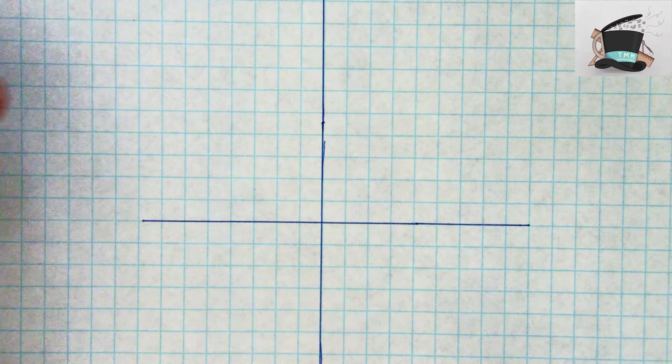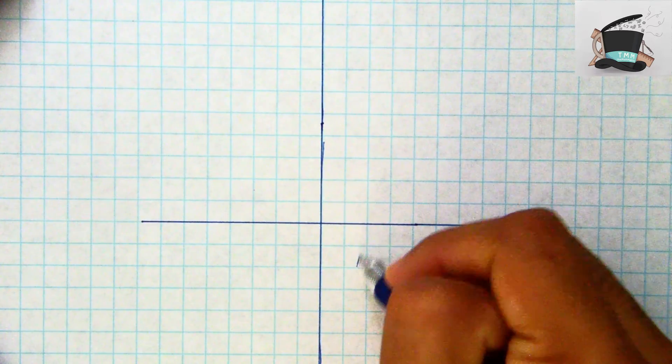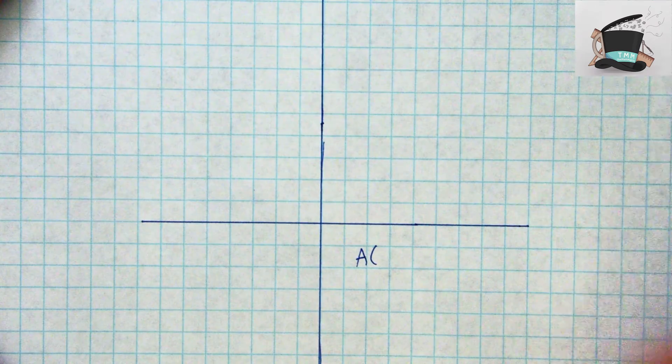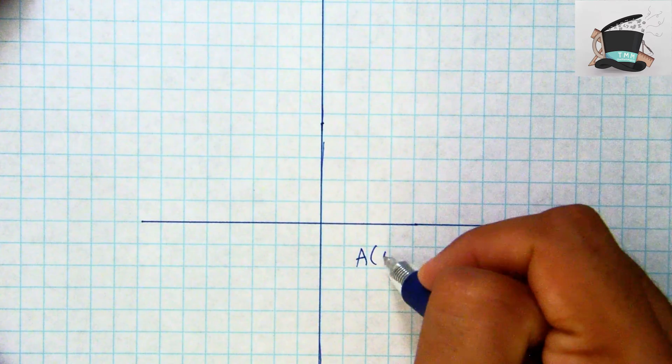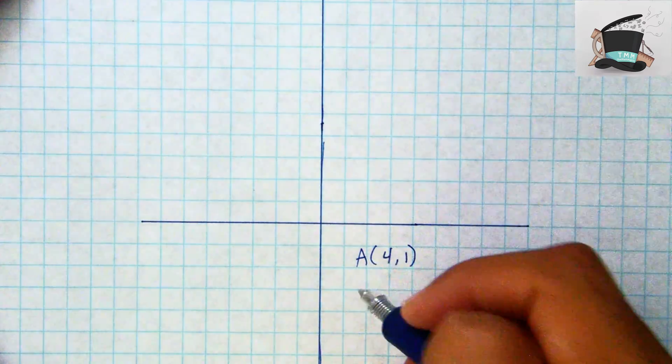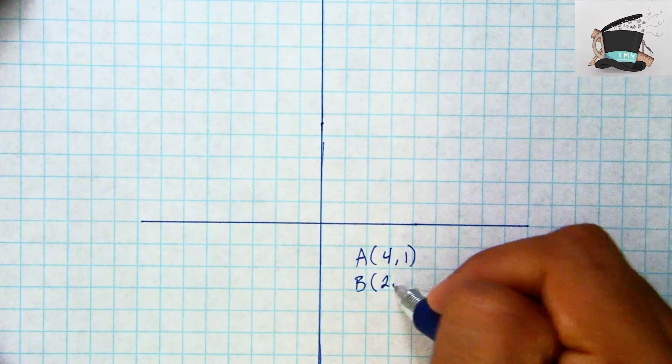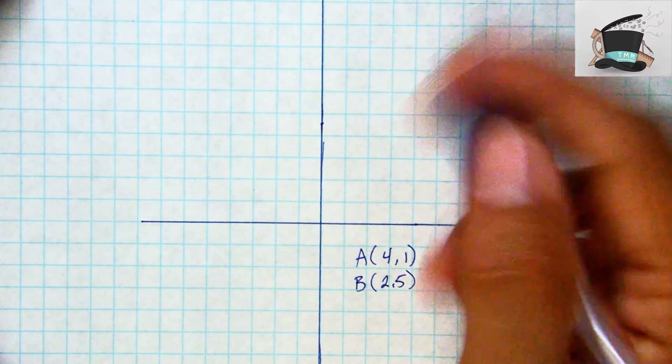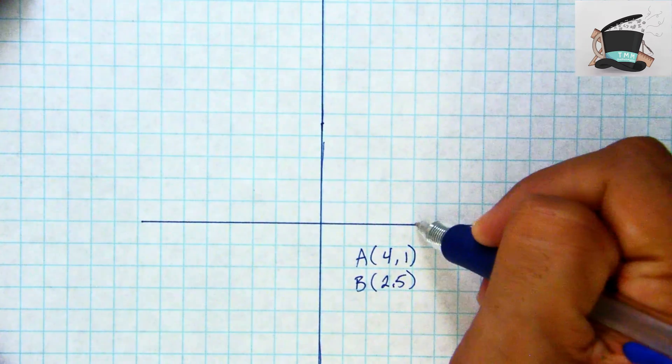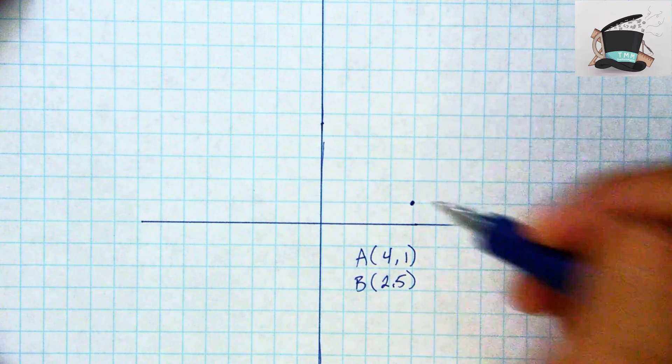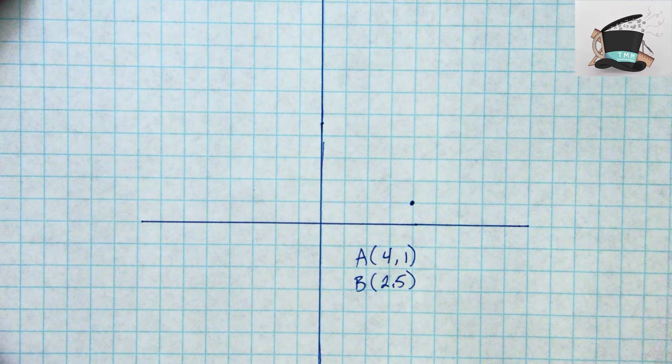So let's go ahead and graph the point A which will be at 4 comma 1, and then we'll graph the point B which will be at 2 comma 5. So to graph point A, I go over 4, I go up 1, there is my point and we'll label that A.